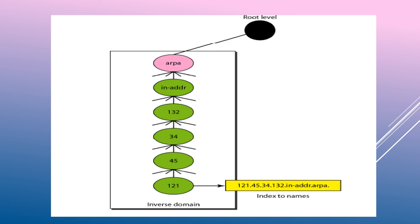In inverse domain, an address like 132 dot 34 dot 45 dot 121 is found in reverse order under in-addr dot arpa. The server serving the whole site is at a higher level than servers serving each subnet. This configuration makes the domain look inverted when compared to the generic or country domain, since the IP address bytes are reversed to perform the lookup.